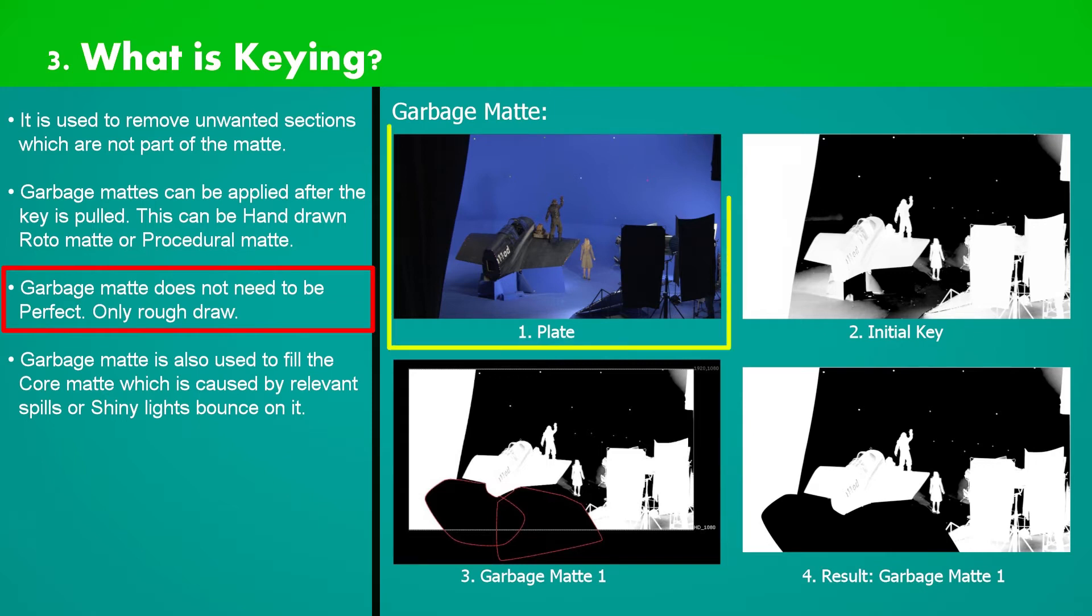On first image we have our plate or image. On second image we have extracted the key using some keying methods. We will dive into these keying methods with great details in future lessons. Generally they are called as keyers.